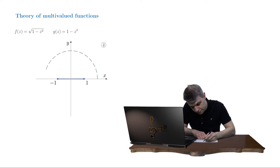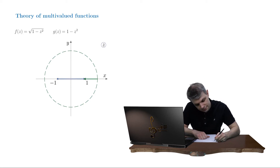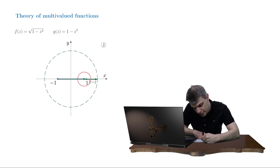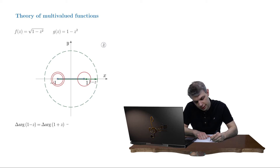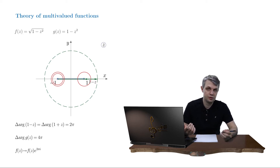Let's draw some contour and follow the rotating arrows. The arrow representing 1 minus z undergoes a rotation of pi in the counterclockwise direction, as does the arrow representing 1 plus z. So the delta argument of 1 minus z equals the delta argument of 1 plus z, which is 2pi. As a result, the change of the argument of g is 4pi, and the entire function returns to its original value multiplied by the exponential factor e to 2pi — meaning the function stays single-valued along this contour.